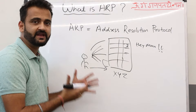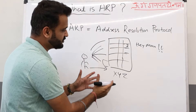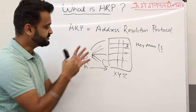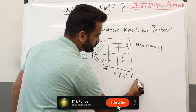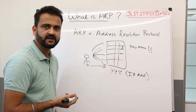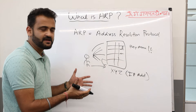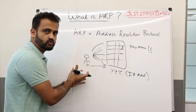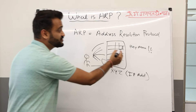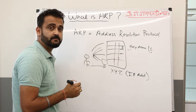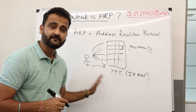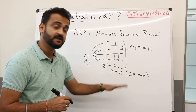This is essentially what ARP does. Knowing that Mohan lives in this particular building is like knowing the IP address. The IP address of Mohan — or of any machine — is a logical address known at the source, but they do not know the MAC number, which is the MAC address. This particular resolution is done by ARP.